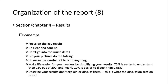There are some tips for writing your results. Focus on the key results — they should be clear and concise, but don't go into too much detail. Let your pictures do the talking, as visuals can clearly show your storyline. However, be careful not to omit anything. Simplify results where possible — for example, 75% is easier to understand than 150 out of 200, and 'nearly 10%' is easier to digest than 9.98%. Remember: describe your results in chapter four, but don't explain or discuss them — that is what the discussion section is for.